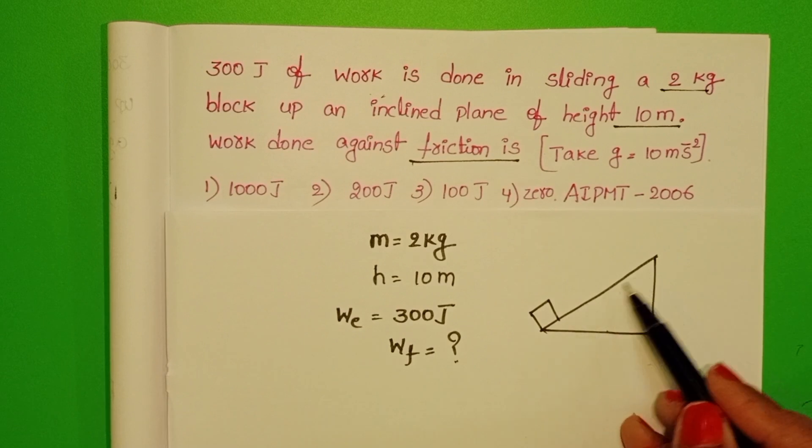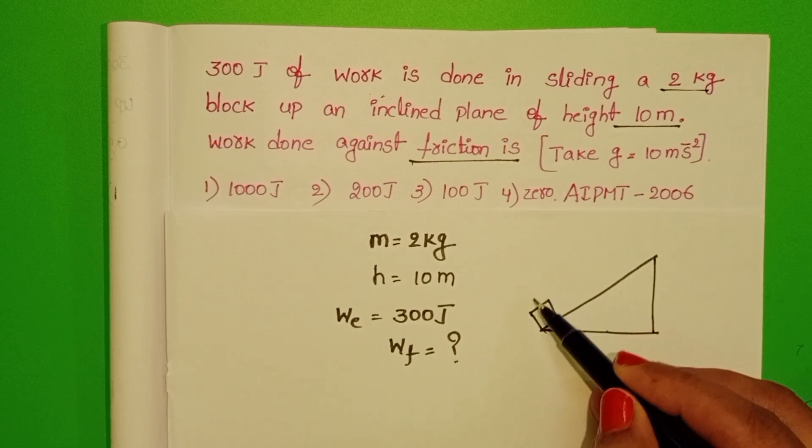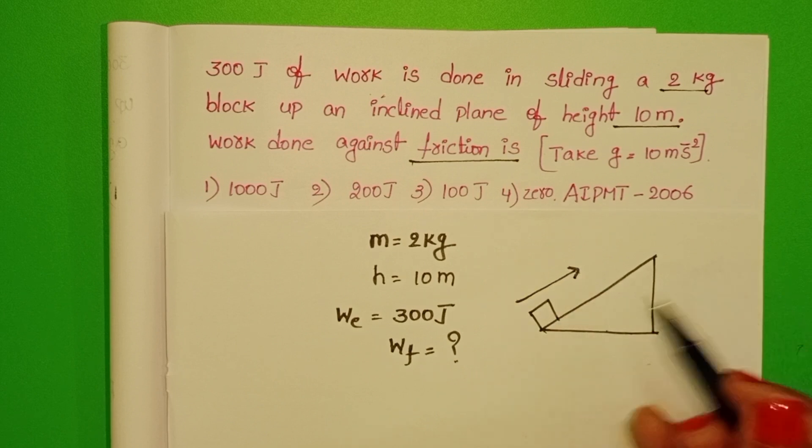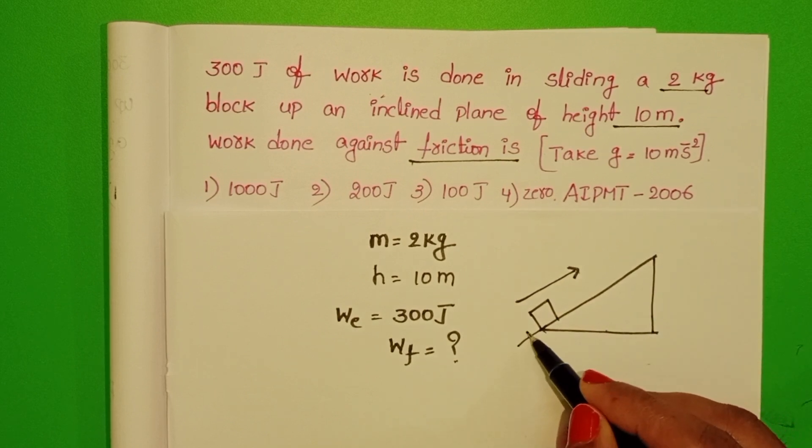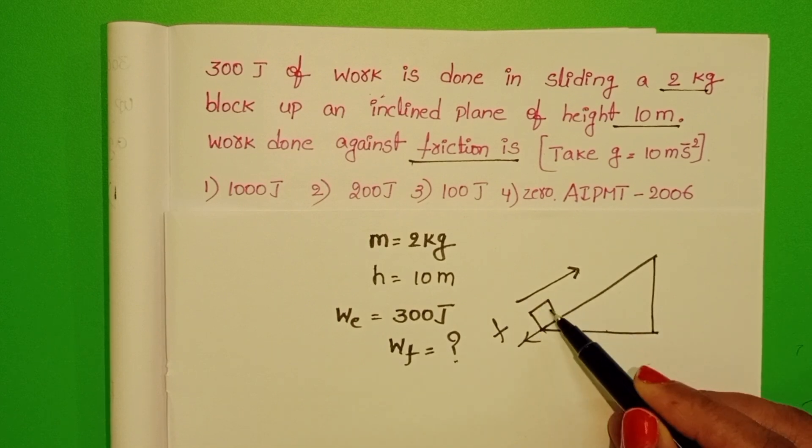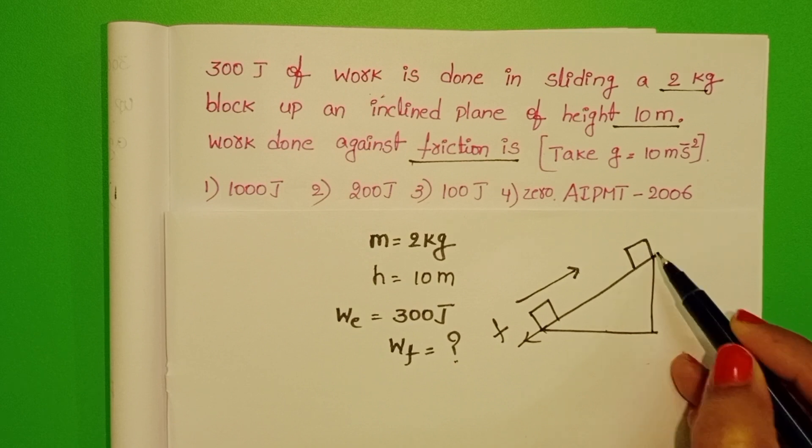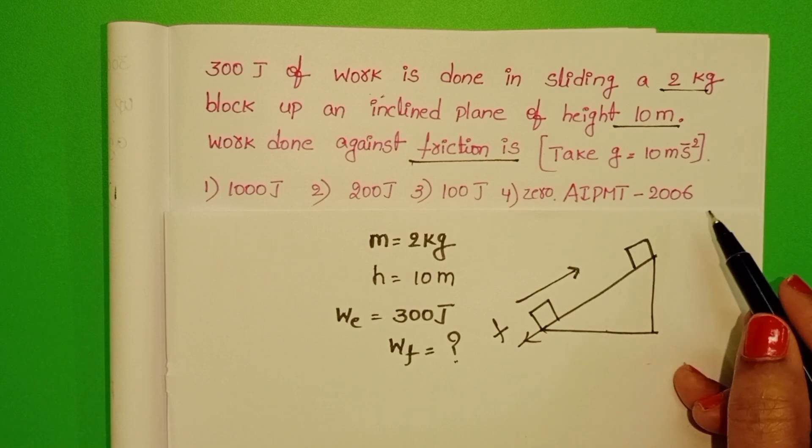The given inclined plane is a rough inclined plane. When this block slides in upward direction, then frictional force acts in downward direction. And this block moving in upward direction, after reaching this position, it gains the potential energy.